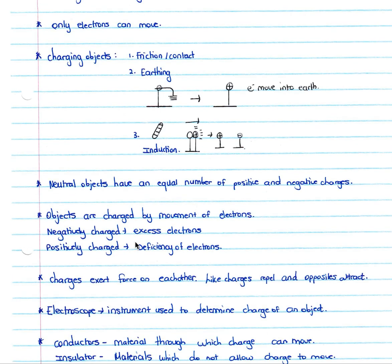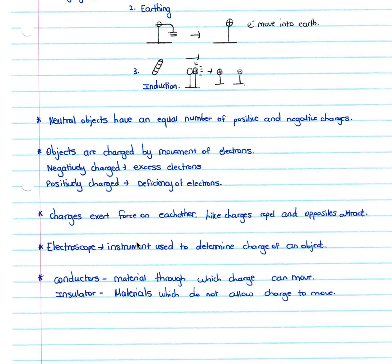Neutral objects or neutral pieces of equipment will have an equal number of positive and negative charges, so your negative charge is simply balanced out by a positive charge, giving the object a neutral charge. Objects are charged by the movement of electrons — your positive charges will never move. So your objects are charged by the movement of electrons only. A negatively charged object has an excess of electrons, and a positively charged object has a deficiency of electrons. We will always describe the charge of an object in terms of electrons because these are the only charges that are able to move.